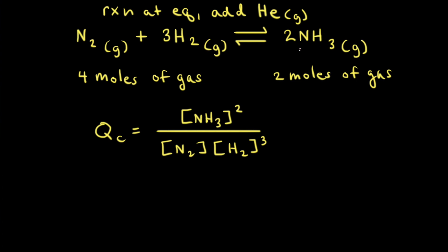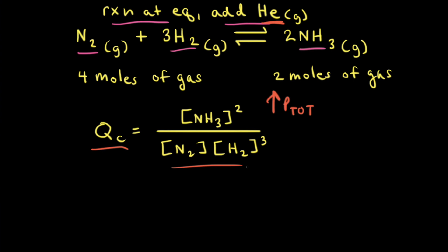Let's go back to the synthesis of ammonia reaction at equilibrium and add helium gas, an inert gas that doesn't react with any of the gases present. It's tempting to say adding this inert gas would increase the total pressure and therefore shift the net reaction to the right. However, helium is not part of the expression for QC, and therefore adding it doesn't actually change any of the concentrations. So QC is still equal to KC after the addition of helium, and the reaction remains at equilibrium with no shift in either direction. Therefore, adding an inert gas to a reaction mixture at equilibrium has no effect on the composition of the reaction mixture.